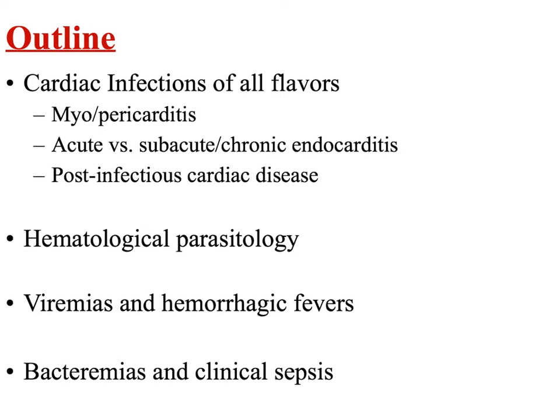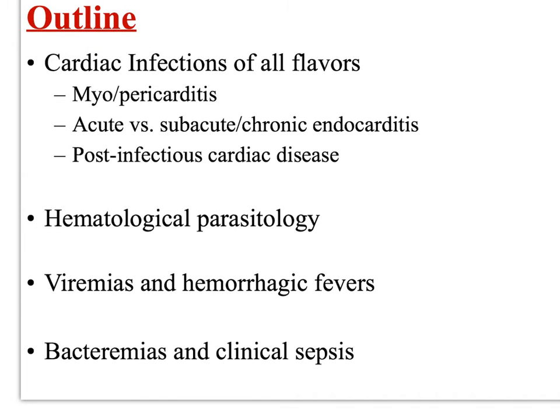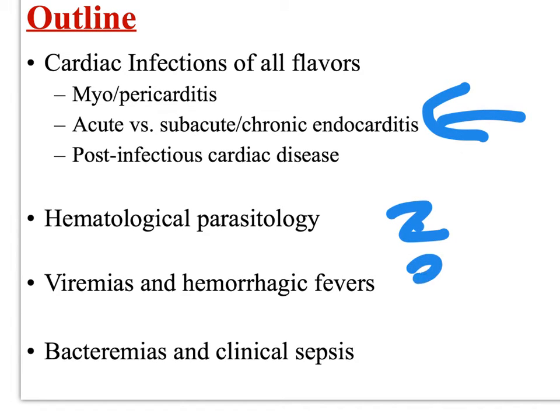For your outline, the first video is going to be cardiac infections of all flavors — we're going to talk about myo and pericarditis, acute versus subacute endocarditis, and then a post-infectious cardiac disease. Video two is going to be hematological parasitology, three are viremias and hemorrhagic fevers, and four is bacteremia and sepsis.